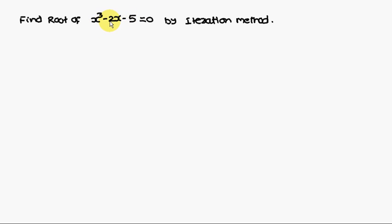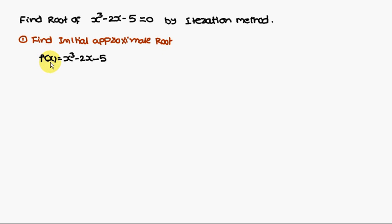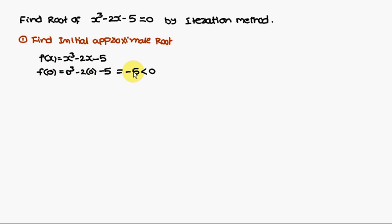The first problem is to solve x³ - 2x - 5 = 0 by the iteration method. First, we have to find the initial approximation. Here f(x) = x³ - 2x - 5. Substituting x = 0 gives -5, which is a negative value.